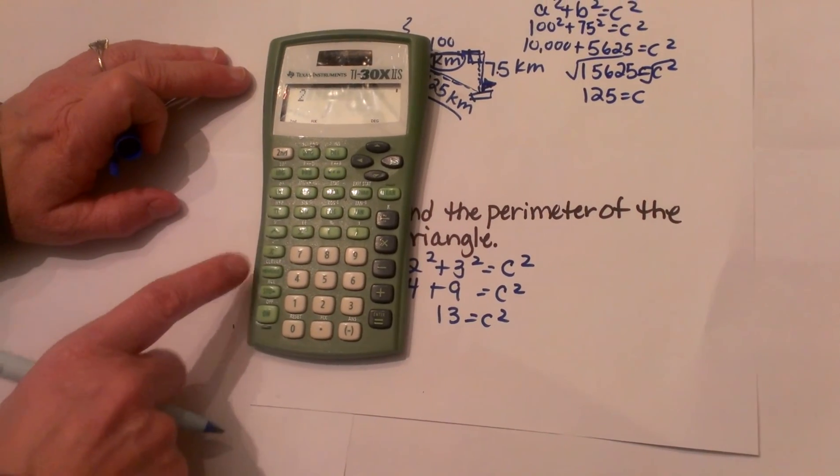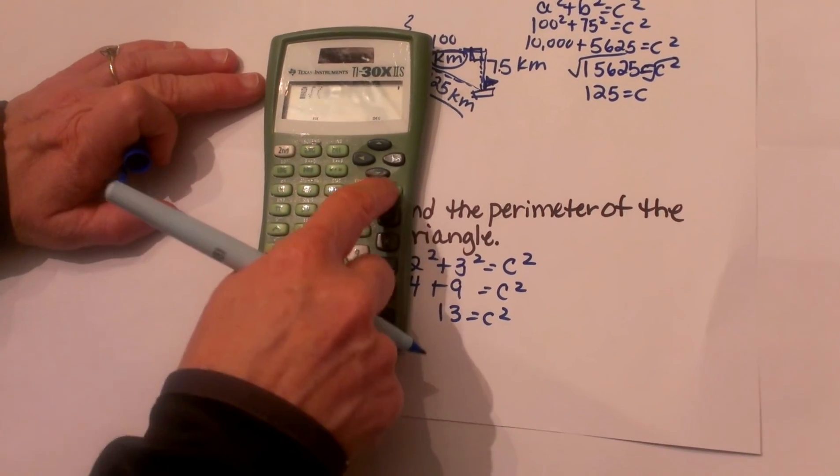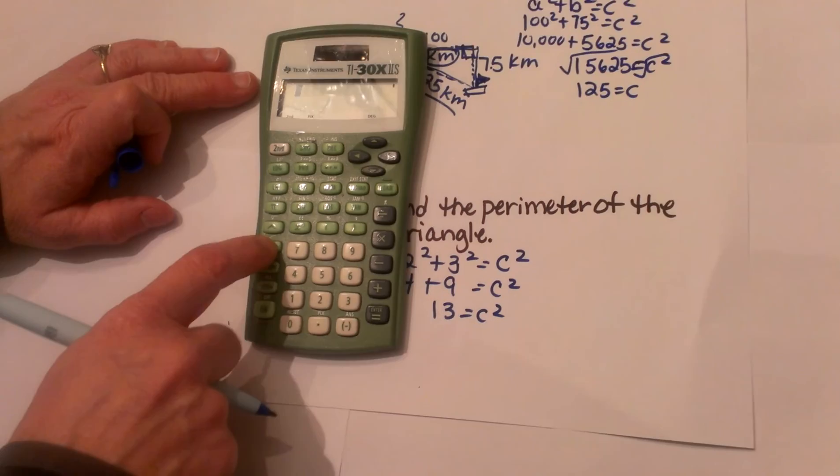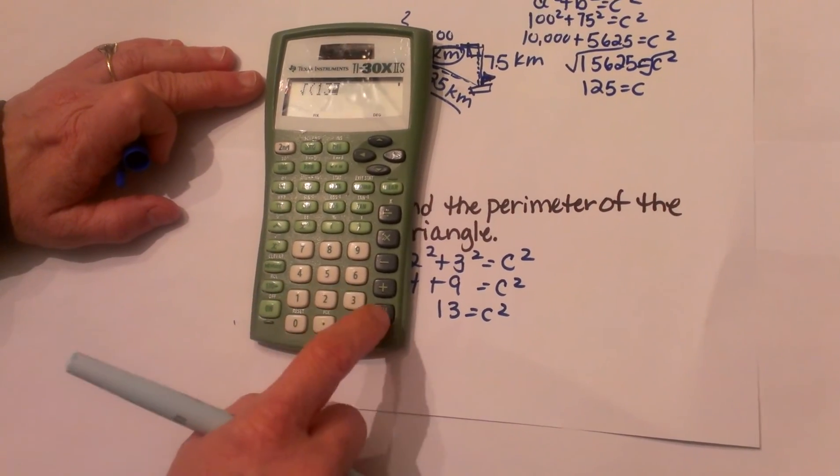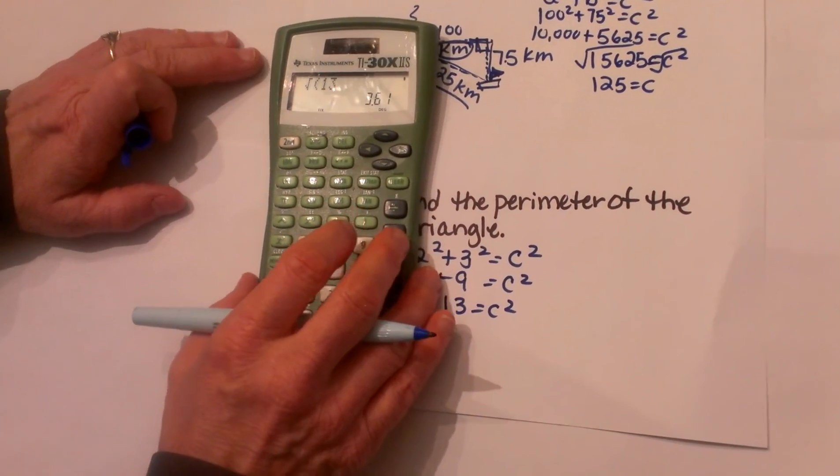So I am going to hit my second square root of 13 and I am going to get 3.61.